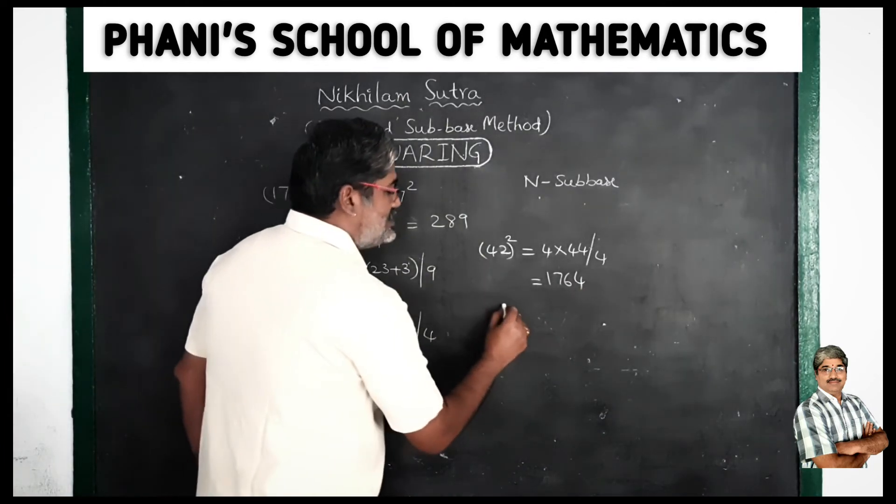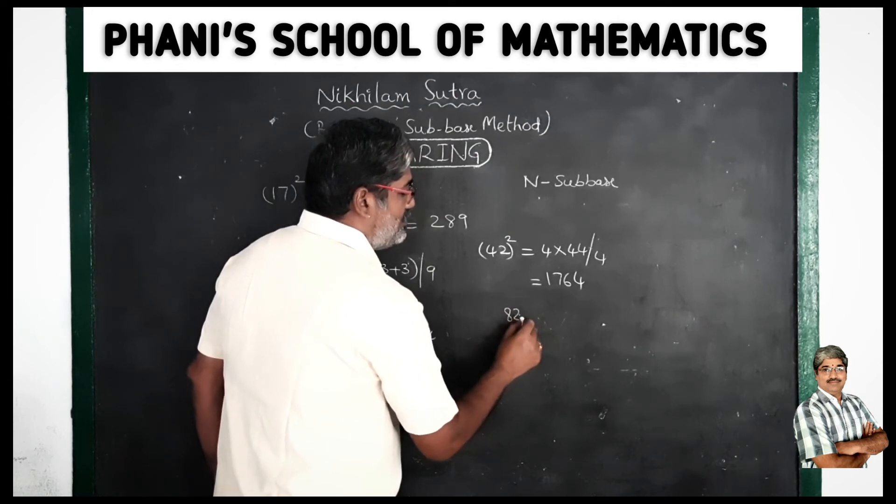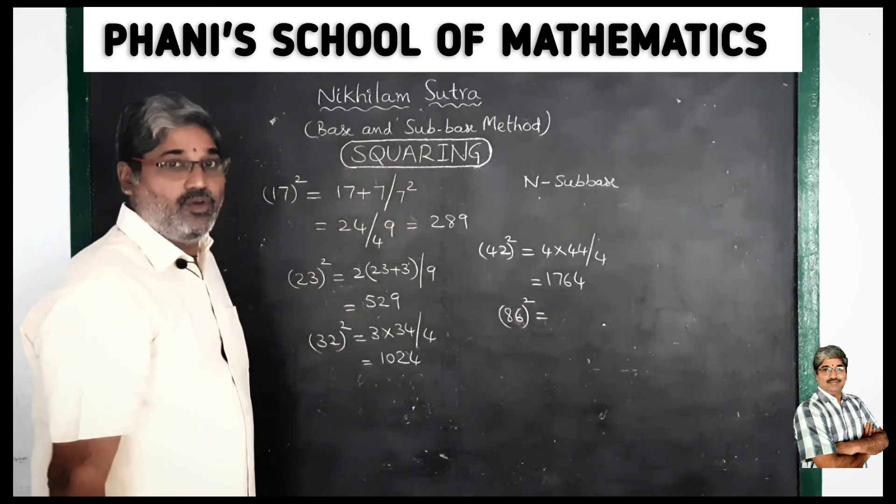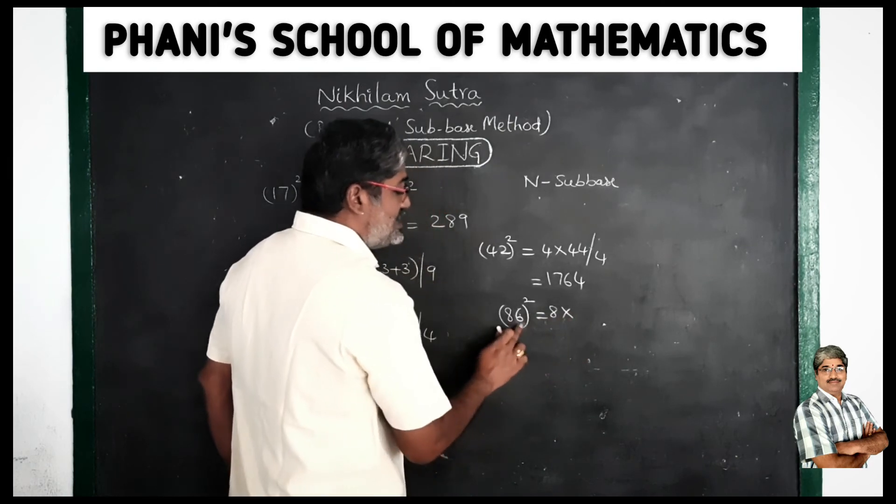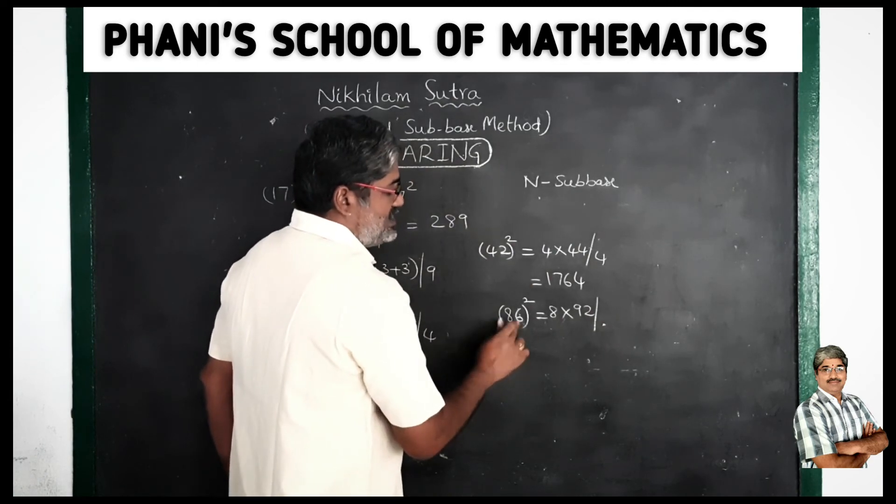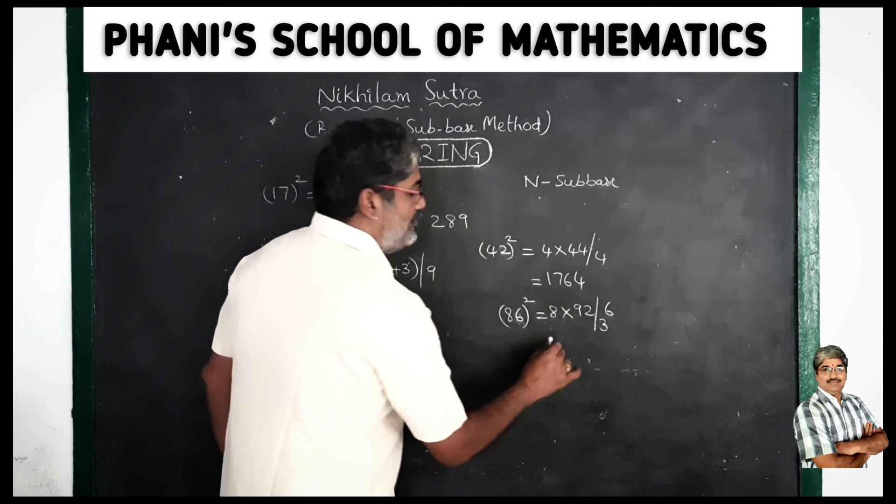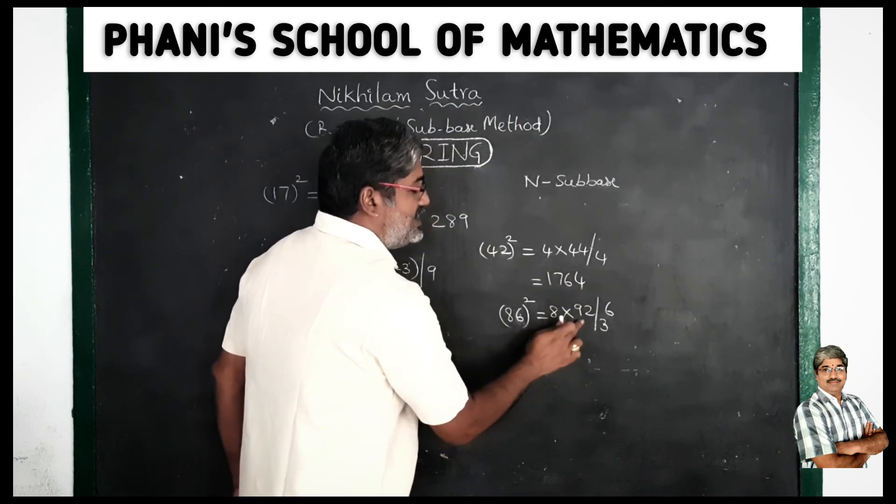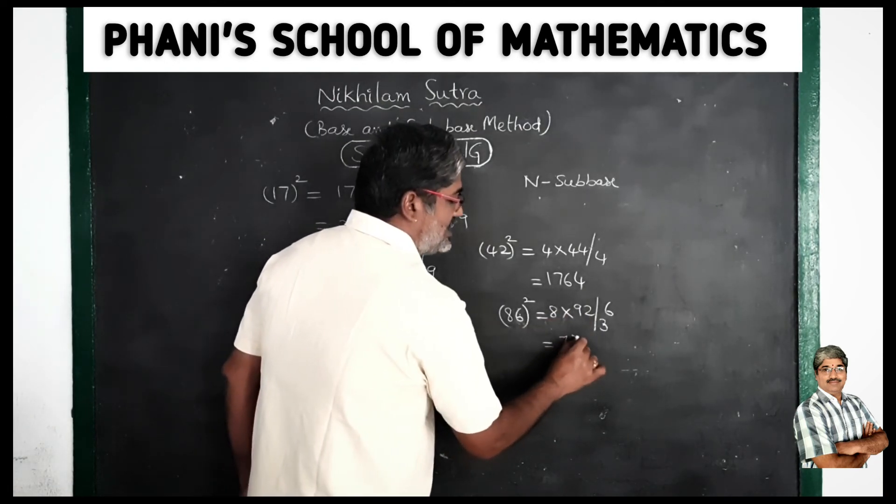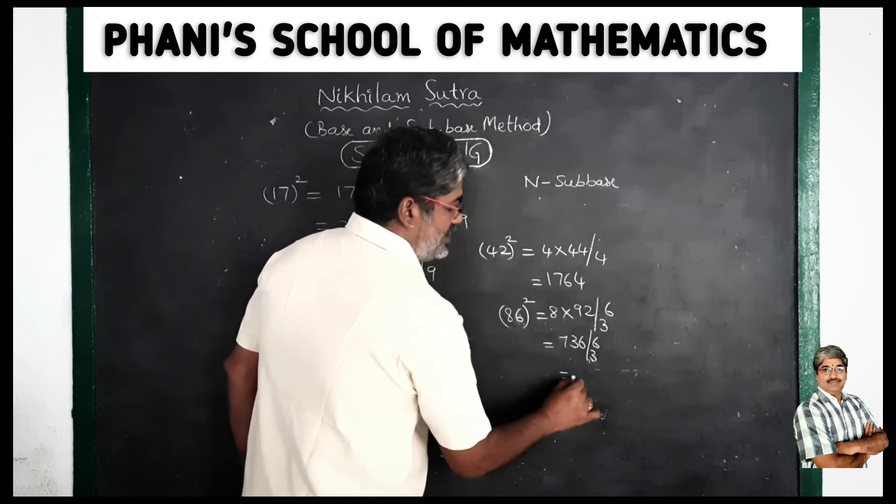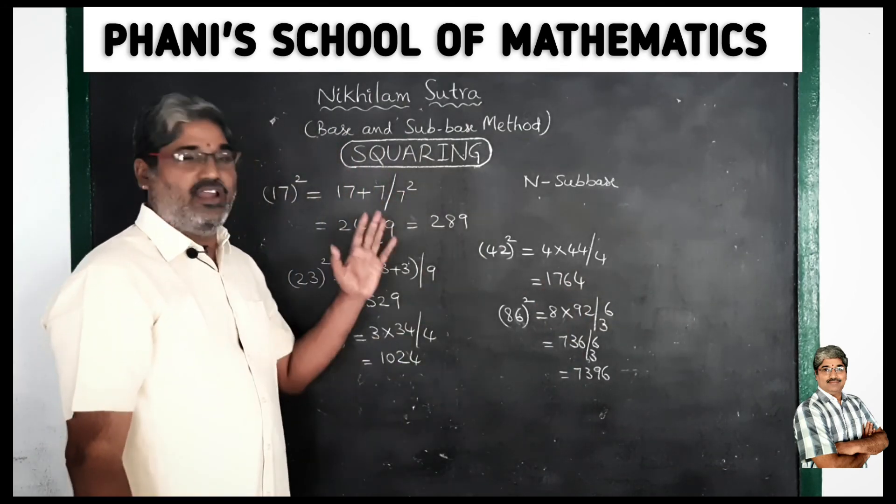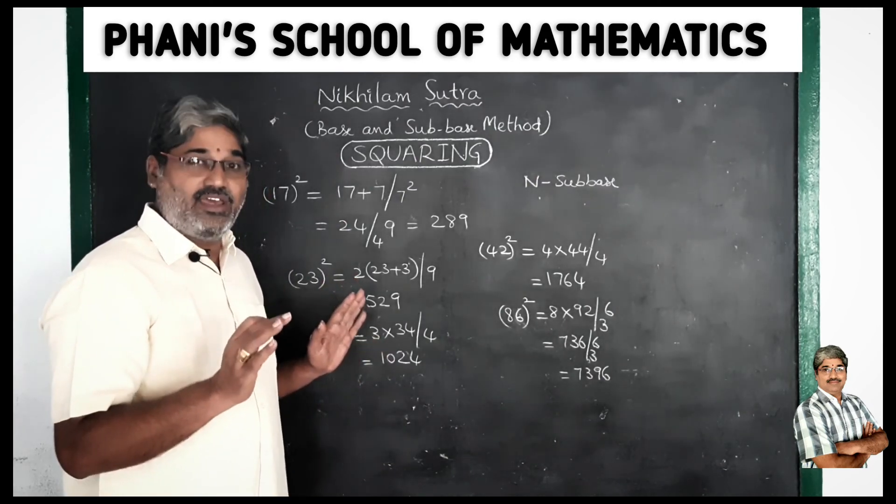Next, 86 square. Okay yes, 8 times 86 plus 6 is 92. 6 square is 36. So 8 nines are, 8 nineties, 92, and 8 nineties are 720, 8 twos are 16 and 736. Suffix 36, that is 7396. Clear.